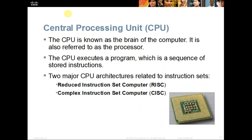Our central processing unit, or CPU, is the main processor doing all of the computing for our computer. The CPU executes a program, and a program is a sequence of stored instructions. There are two major types of CPU architecture relating to instruction sets: reduced instruction set computer, or RISC, and complex instruction set computer, or CISC.